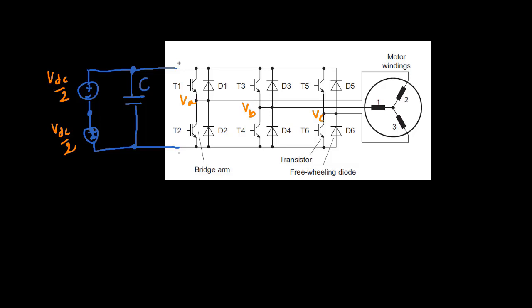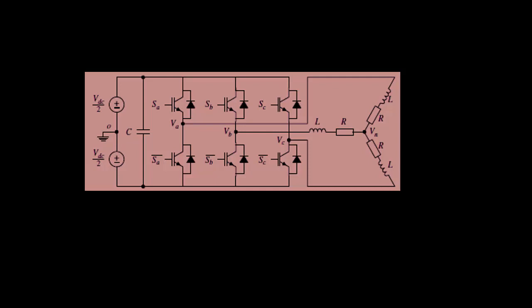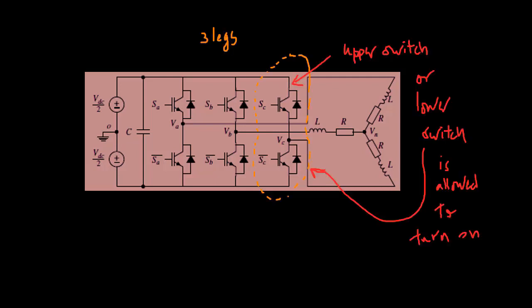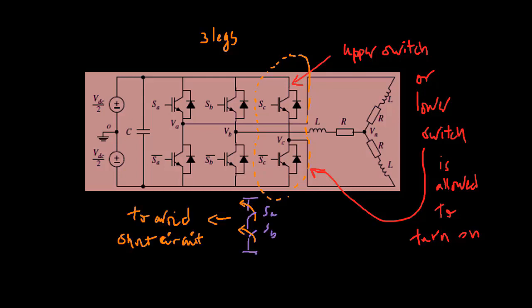For the simplification of analysis, it is sufficient to assume that the middle point between the two DC sources is referred to the ground. Thus, all the voltages can be represented with respect to the ground. For example, the neutral point voltage of the AC motor is referred to as VN with respect to the ground. Within each leg of an inverter, only one switch is allowed to turn on while the other is off at any given time, to prevent short circuit.